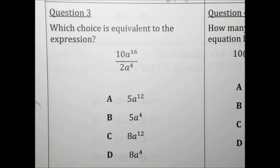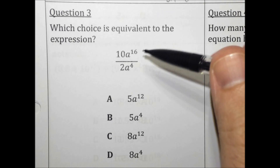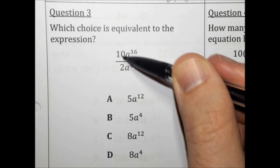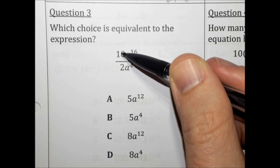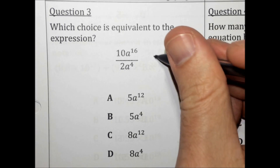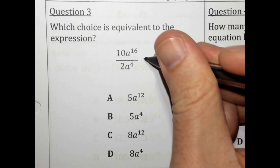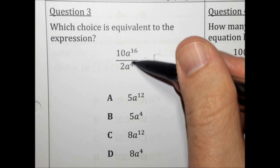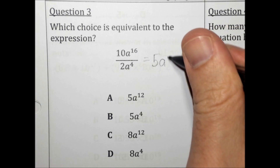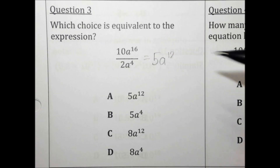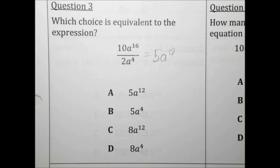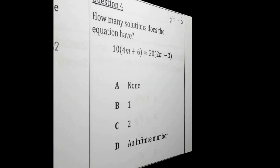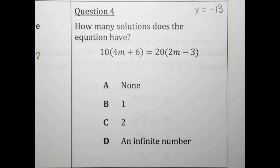Which choice is equivalent to the expression? When you divide, you subtract exponents. But 10 divided by 2 has no exponents, so you just do 10 divided by 2, which is 5. A to the 16th divided by A to the 4th — when you divide, you subtract the exponents. So we get A to the 16 minus 4, which is 12. The answer is 5A to the 12th. That's choice A.